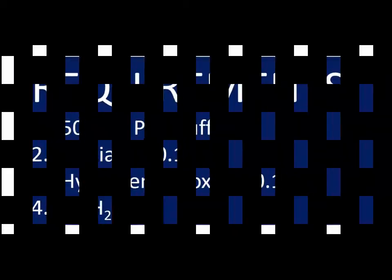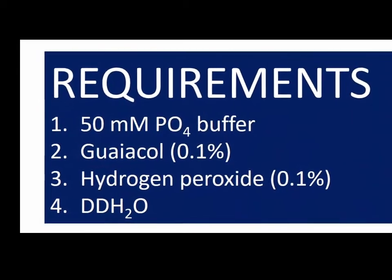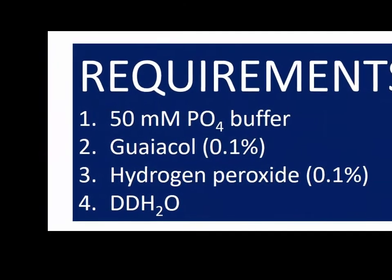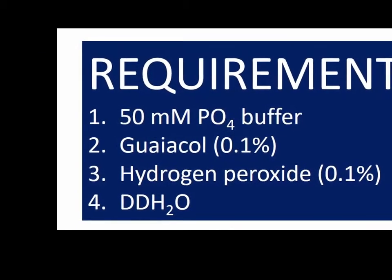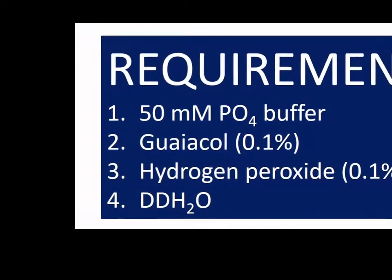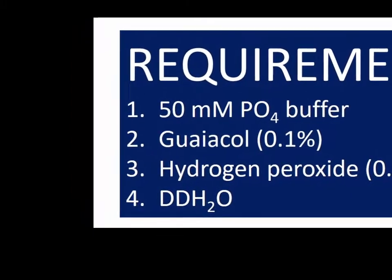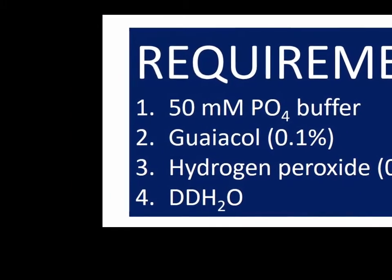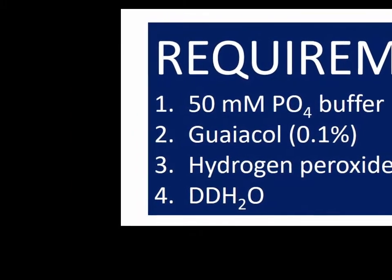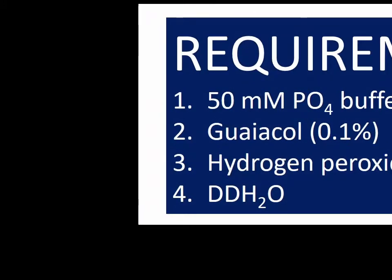The requirements for peroxidase activity assay. For this quantitative determination of peroxidase, we require 50 millimolar phosphate buffer, guaiacol 0.1%, hydrogen peroxide 0.1%, and double distilled water.